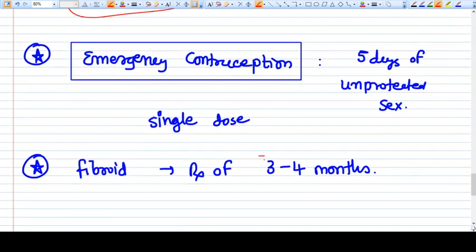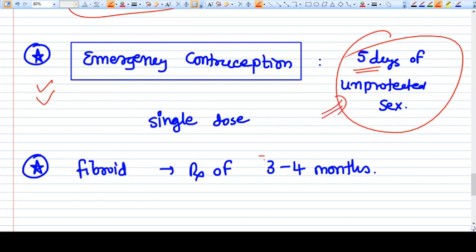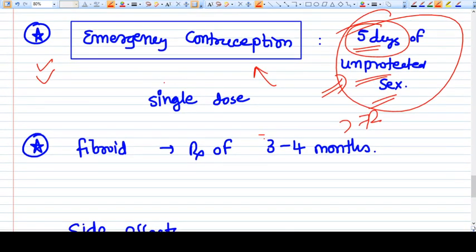The first use is emergency contraception. The effect of ulipristal can be there if we give this emergency contraception within five days of unprotected sex. So it is generally considered as more than those 72-hour medications. Single dose is preferred.